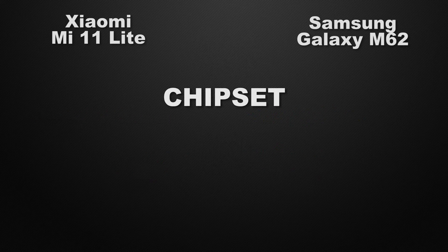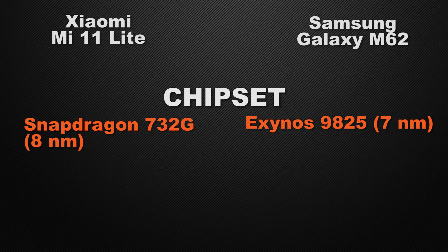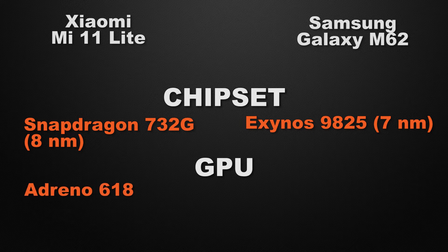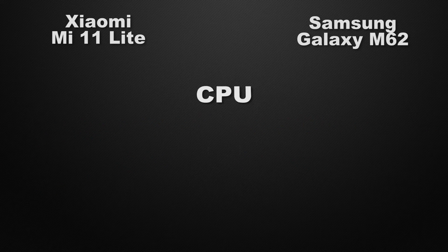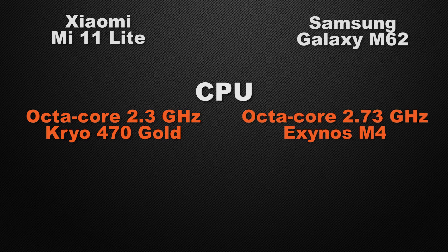For the processor, the 11 Lite is powered by Snapdragon 732G based on an 8nm processor, whereas the M62 is powered by Exynos 9825 based on an 8nm processor. The winner here is M62 because it has a faster processor. For GPU, the 11 Lite has Adreno 618 while the M62 has Mali G76 — the winner is M62 as it can give more FPS in games. For clock speed, the 11 Lite clocks at 2.3GHz while the M62 clocks at 2.73GHz on an Octa-Core Exynos chipset, so M62 wins with slightly faster clock speed.